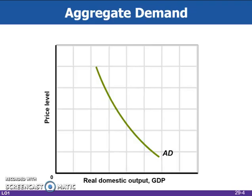This figure depicts the aggregate demand curve. The downsloping aggregate demand curve, AD, indicates an inverse or negative relationship between the price level and the amount of real output purchased.